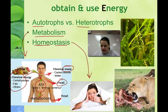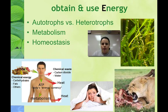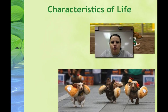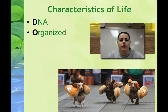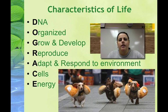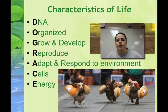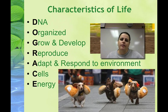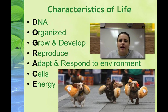So that is homeostasis and energy use. Remember DOG RACE: DNA, Organized, Grow and develop, Reproduce, Adapt and respond, Made of cells, and Energy. Those are the characteristics that make something alive.